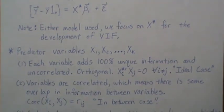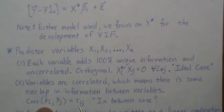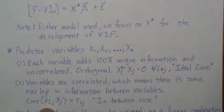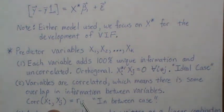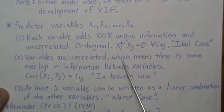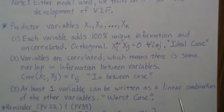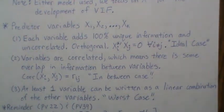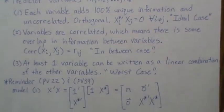Case two is the in-between case: variables are correlated, meaning there is some overlap in the information between variables. If the correlation is really close to zero we're close to the ideal case; if it's close to one we're close to the worst case. Pretty much every regression I've ever run has been in this in-between case. The worst case is when at least one variable can be written as a linear combination of the other variables — and if that's the case there's an infinite number of least-squares solutions to our model.